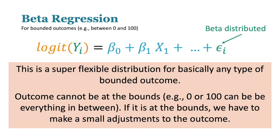By default, beta regression uses a logit link, so the interpretation becomes just like logistic regression. One limitation is the outcome cannot be at the exact bounds — it can't be exactly 0 or 100, but it can be everything in between. If it is at the bounds, we make a small adjustment to the outcome using a formula that just scoots it in slightly, and it works just fine.